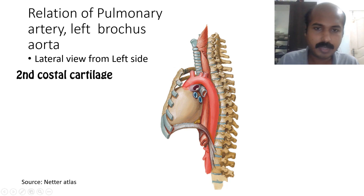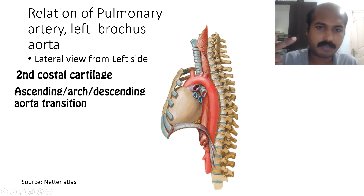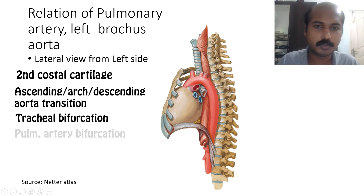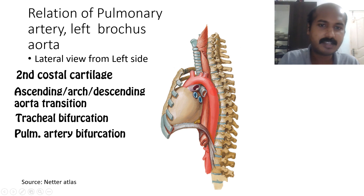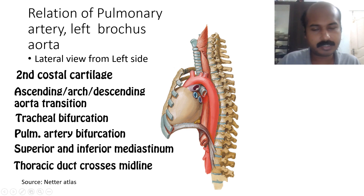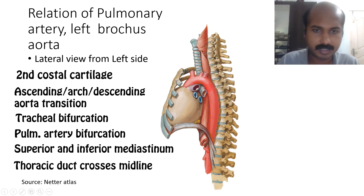At the sternal angle level, many events occur: the second rib attaches here; the ascending aorta ends and the arch of the aorta begins and ends; the trachea divides into the two principal bronchi; the pulmonary trunk divides into two pulmonary arteries; the division into superior and inferior mediastinum occurs; and the thoracic duct shifts from the right side of the vertebral column towards the left side.